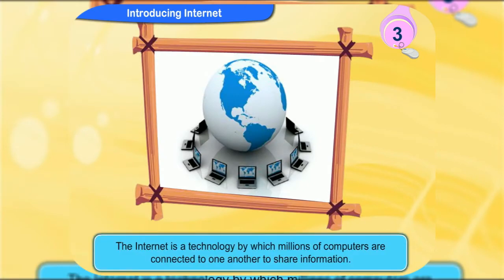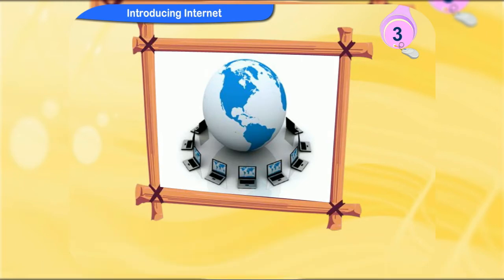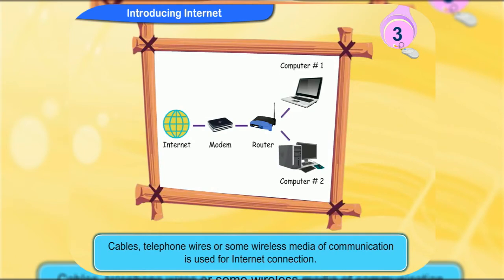The internet is a technology by which millions of computers are connected to one another to share information. How are so many computers connected to each other? Cables, telephone wires or some wireless media of communication is used for internet connection. So these computers with internet connection can easily access the information available from all around the world.